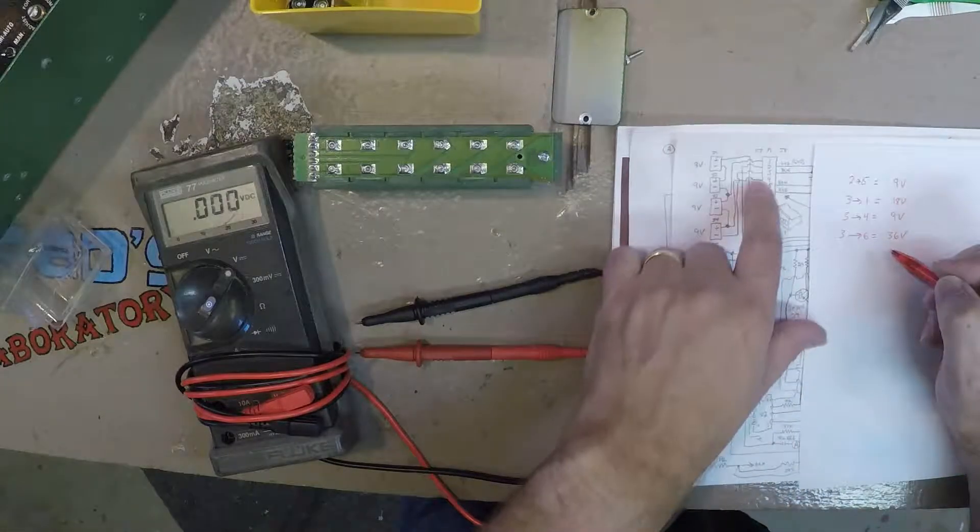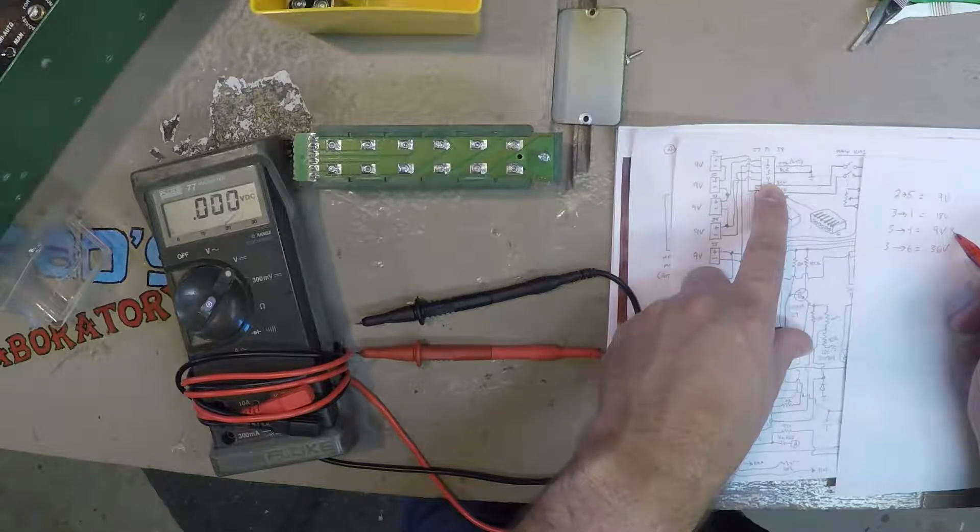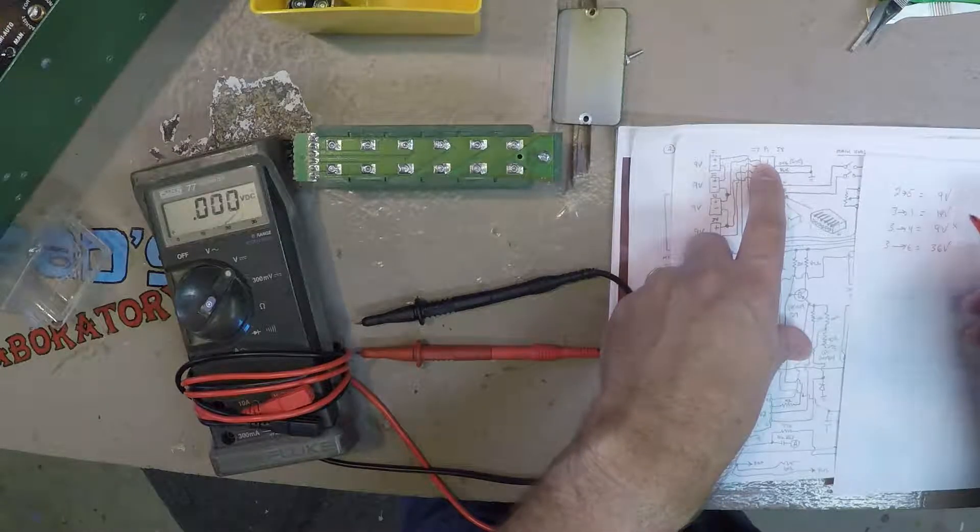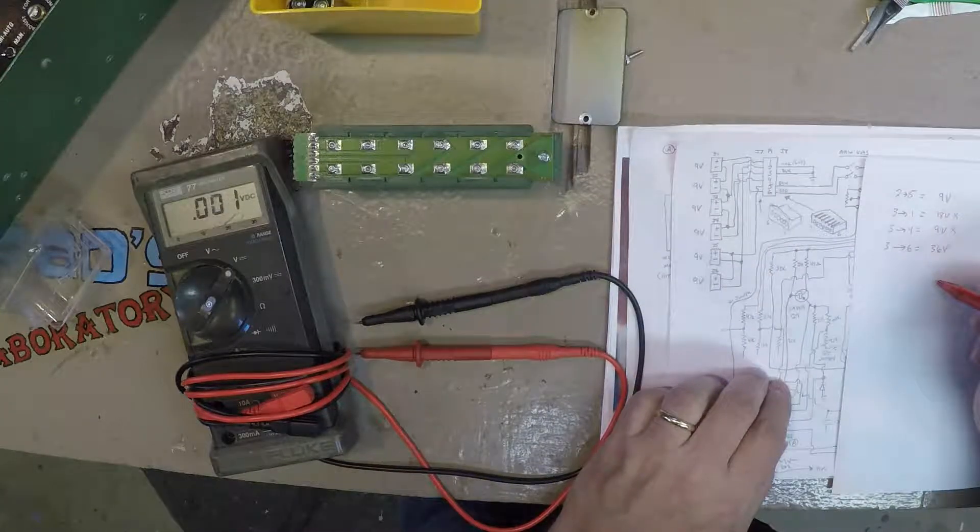But the problem is, 4 is not used, so this is not used. One's not used, so there's 18 volts not used. So just this 9 and this 36 volts are being used. So there it is.